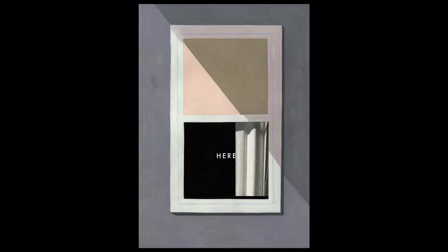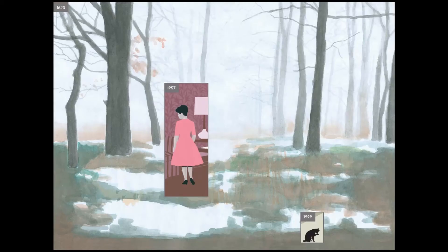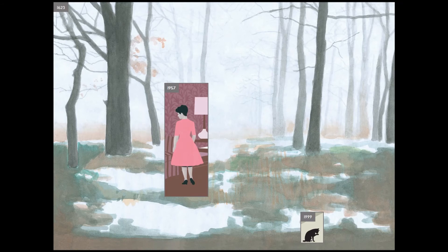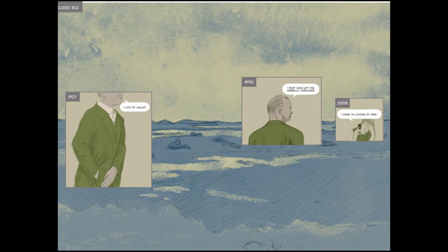My last example is Richard McGuire, another American cartoonist. I will say a few words about his most important book, called Here. The idea of the book is more directly connected to space than to time. At first look we are discovering one house and the landscape around it at different moments with many panels. But what we discover is that we are traveling through this house across different periods and even different centuries.